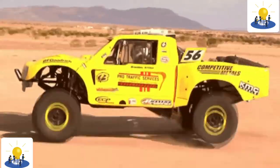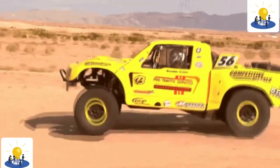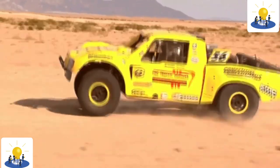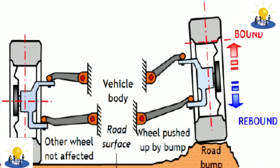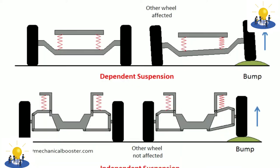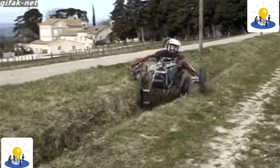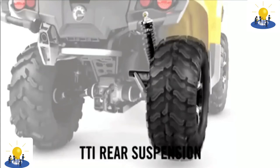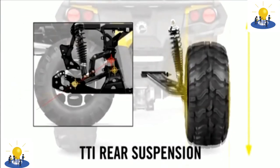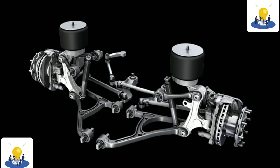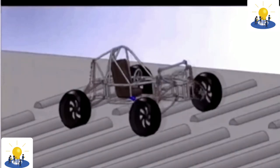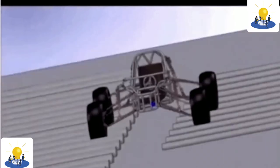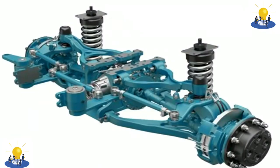IRS has the rear wheels independently sprung. A fully independent suspension has independent suspension on all wheels. Some early independent systems used swing axles, but modern systems use Chapman or MacPherson struts, trailing arms, multi-link, or wishbones. Independent suspension typically offers better ride quality and handling characteristics due to lower unsprung weight and the ability of each wheel to address the road undisturbed. Independent suspension requires additional engineering effort and expense versus a beam or live axle, and a very complex IRS solution can result in higher manufacturing costs.